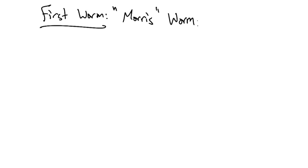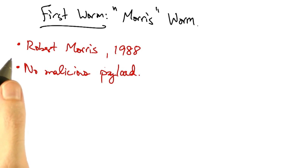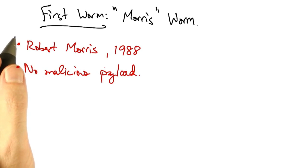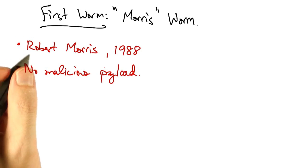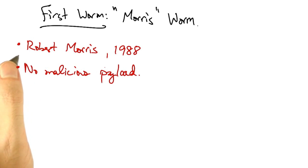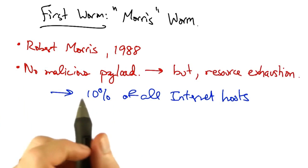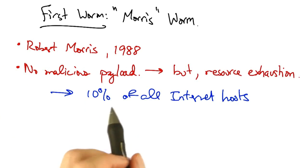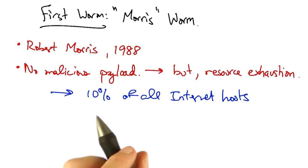The first worm was designed by Robert Morris Jr. in 1988. The worm itself had no malicious payload, but it ended up bogging down the machines that it infected by spawning new processes uncontrollably and exhausting resources. At the time it was released, it affected 10% of all internet hosts.